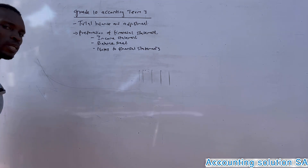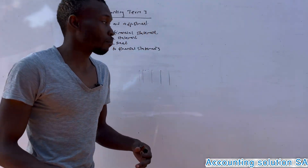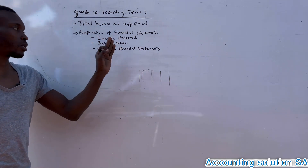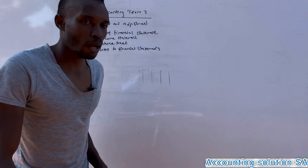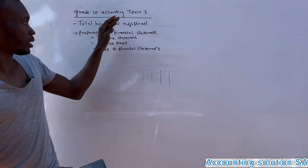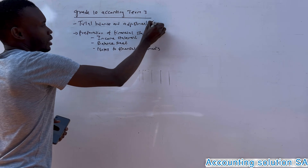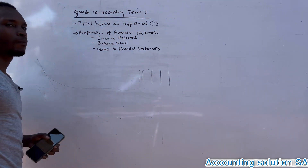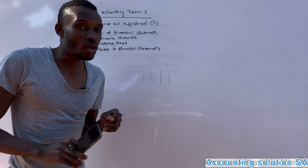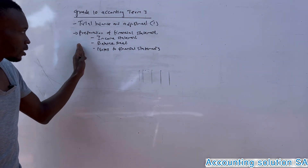Notes to financial statements means you take the balances from those notes and post them into the balance sheet and income statement as well. So you have to make sure that everything done under the first chapter — all the adjustments — are going to affect the financial statements as well.